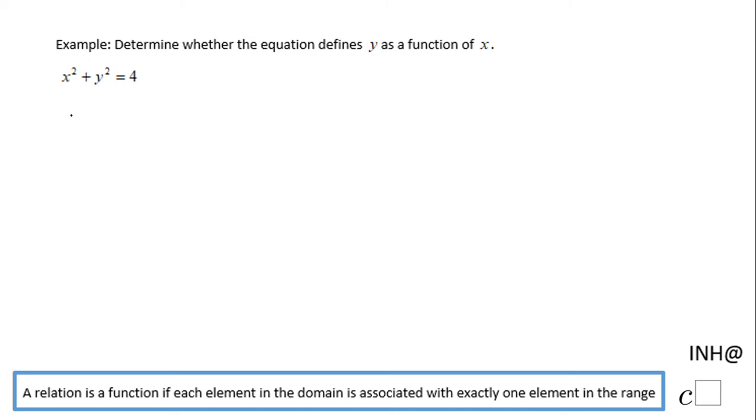Welcome back to C squared. In this example we have a relation x² + y² = 4 and want to see if this equation defines a function. I have here the definition of a function which says a relation is a function if each element in the domain is associated with exactly one element in the range. Exactly one, that's the keyword.